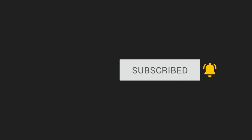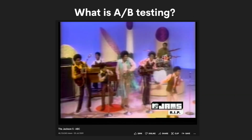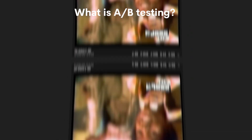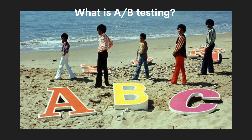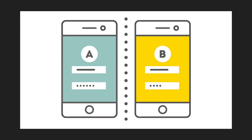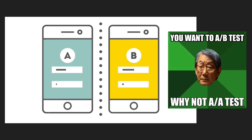Please take a moment and subscribe to our channel. What is A-B testing? An A-B test is a controlled experiment, sometimes called a split test. It's when you're trying to test whether something like a new feature or a new color will produce a different result than the current state.